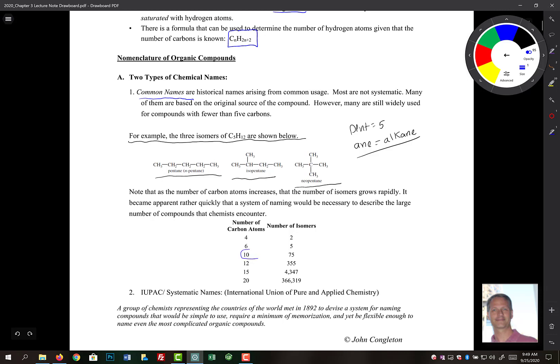If you just had 10 carbons, you have 75 different isomers. So no one's going to memorize 75 different names of a molecule for different isomers of a C10H22. So because of that and because of the growing field of organic chemistry, the IUPAC system was developed.